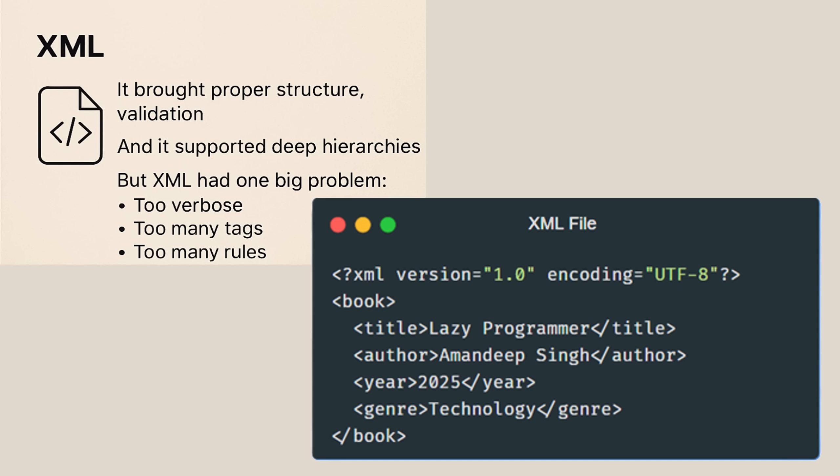Then came XML — Extensible Markup Language. It brought proper structure, validation, and it supported deep hierarchies. For a long time, XML was the backbone of early web services, SOAP APIs, and big document systems. But XML had one big problem: it was too verbose. There were too many tags and too many rules. Its strictness made XML powerful, but at the same time, it made it painful for developers.